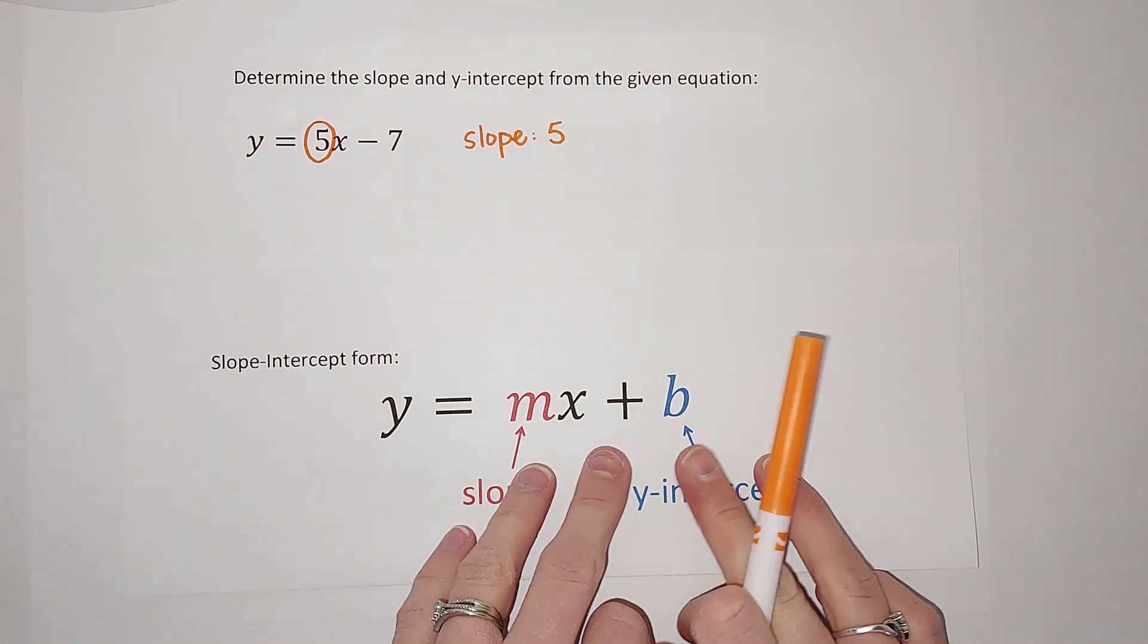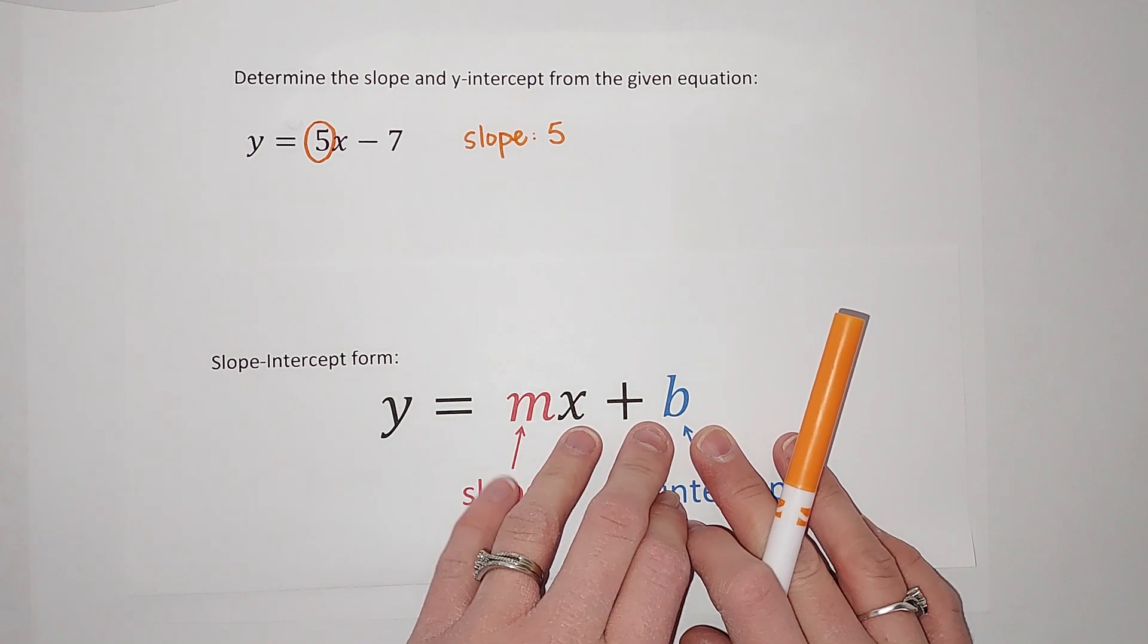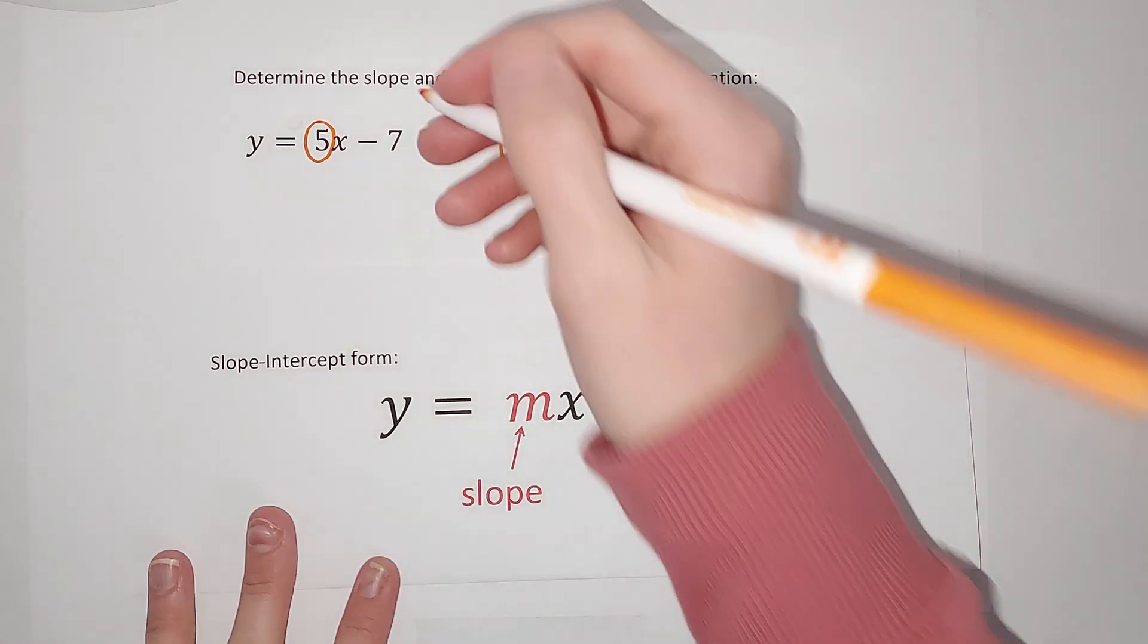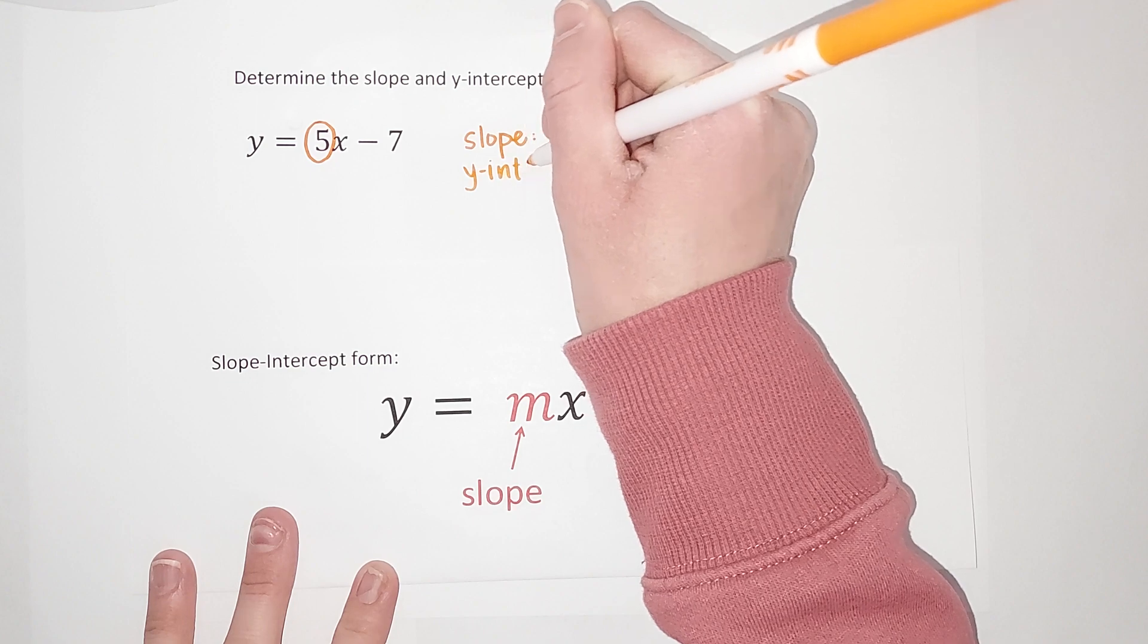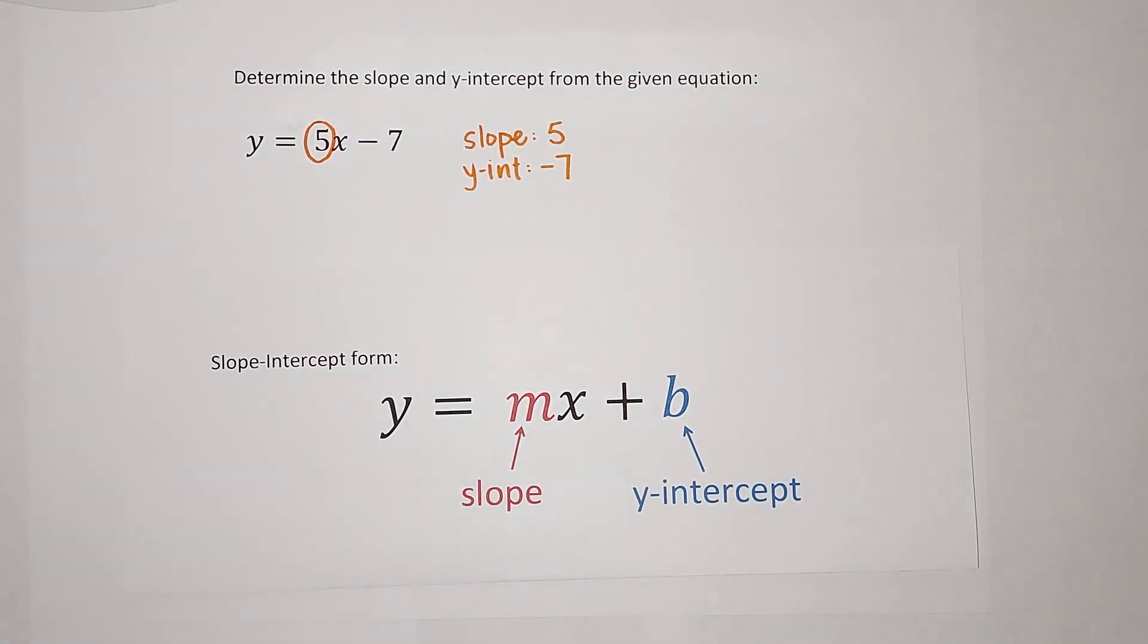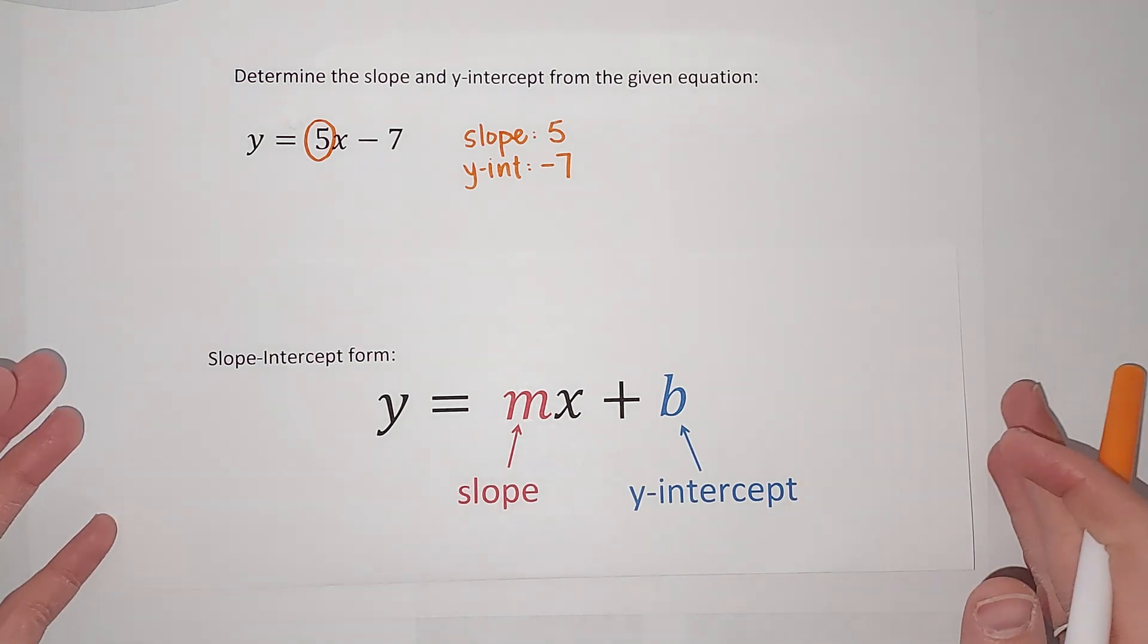And then my y-intercept, again, when my equation is written like this, is whatever is being added or subtracted on the back. And a lot of times we call that b. So in this case, my y-intercept is negative 7. And just like that, there's my slope and my y-intercept. We could graph a line with this, which is in your future. And I'll actually link a video in the corner if you need that.